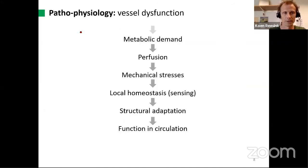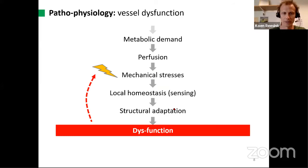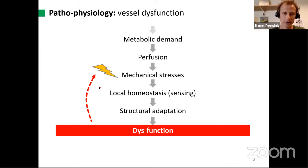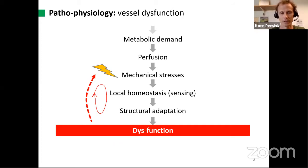This scheme also teaches us what happens when there is dysfunction. When something goes wrong, very often it means there is a feedback to the mechanical stresses — shown here by the red arrow. The essence is that with dysfunction, it's progressive — it's a loop. This is pathophysiology going into vessel dysfunction, and I'll be using this concept to talk about basic mechanics.